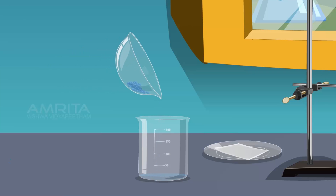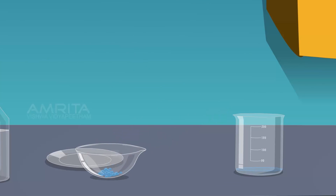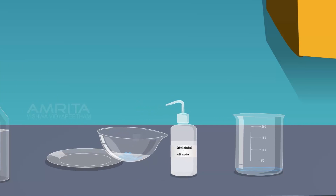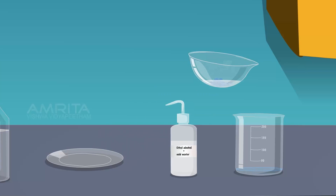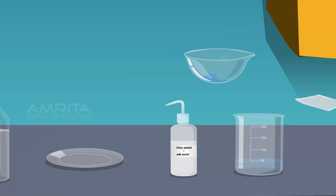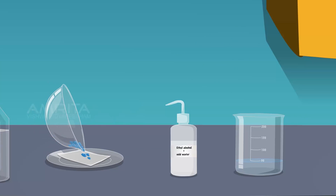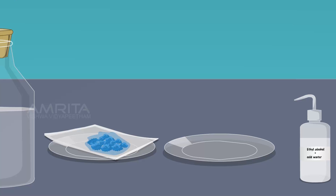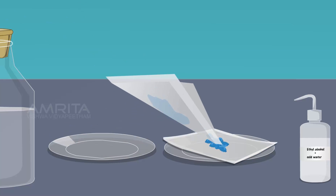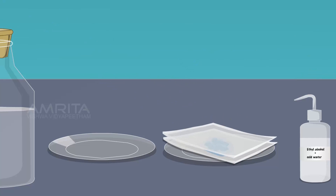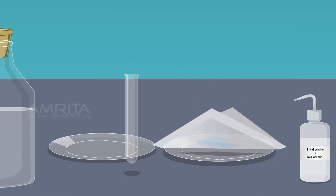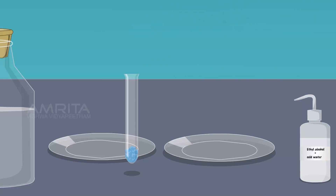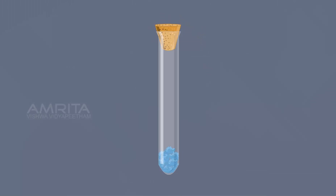Decant off the mother liquor carefully to the beaker. Wash the crystals with little ethyl alcohol containing a small amount of cold water. Remove the crystals on a filter paper which soaks the solution. Transfer the crystals to another filter paper and dry them by pressing gently with another filter paper. Transfer the crystals into a dry test tube and cork it. The crystals of copper sulphate are triclinic, transparent and blue.